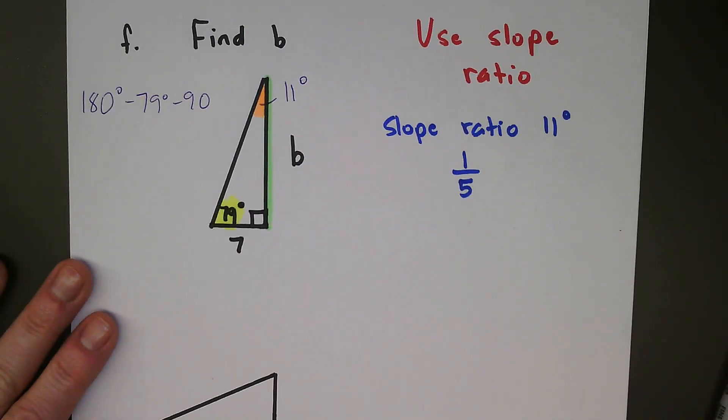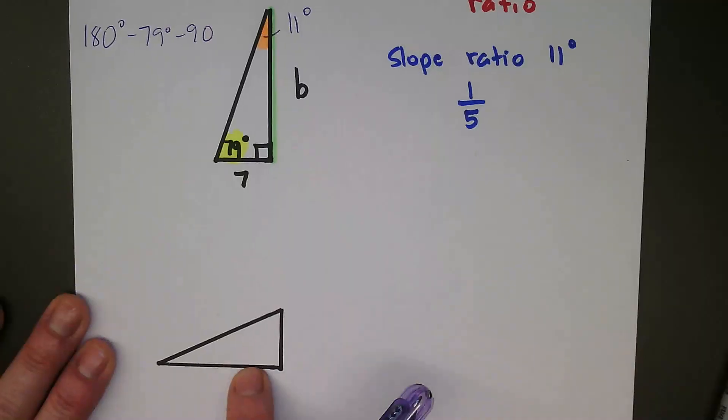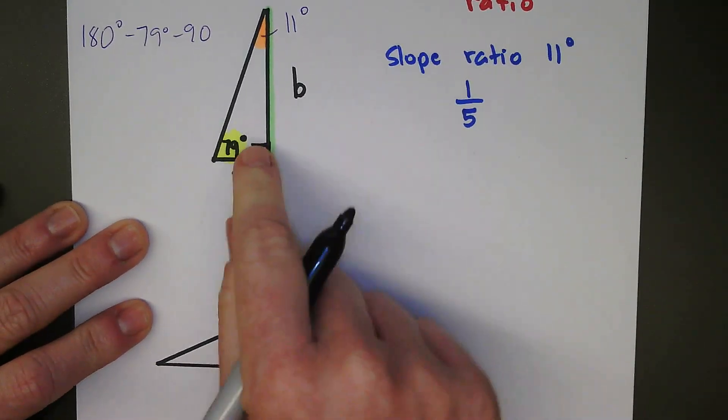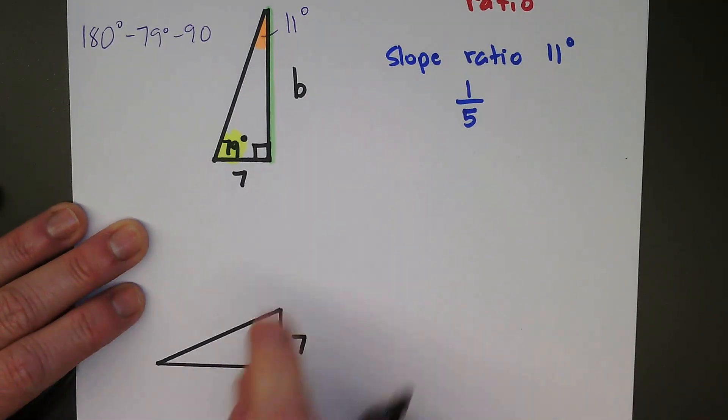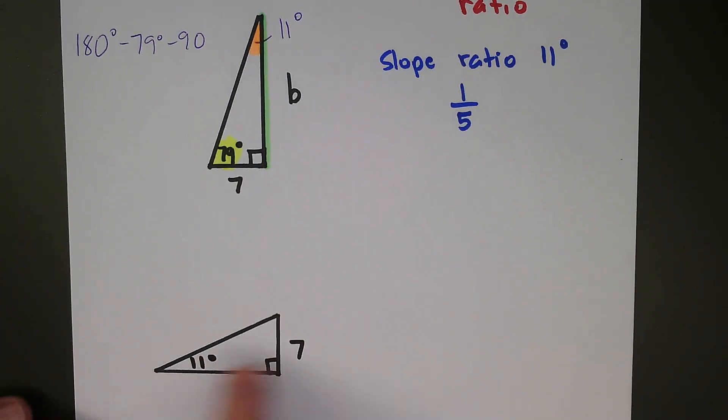Now, you can do it from here, like from exactly what you're seeing, but what you might also want to do is just take this triangle and reorient it with the same pieces. So this is the right angle right here. This is the short leg. I just moved it. The reason I moved it is I wanted my 11-degree angle to be here just because at the beginning, that's kind of how we were looking at slope ratios. The acute angle was on the left.